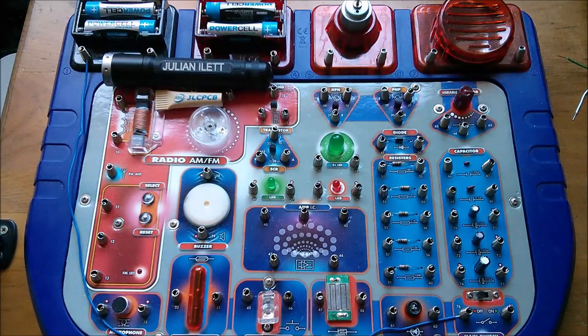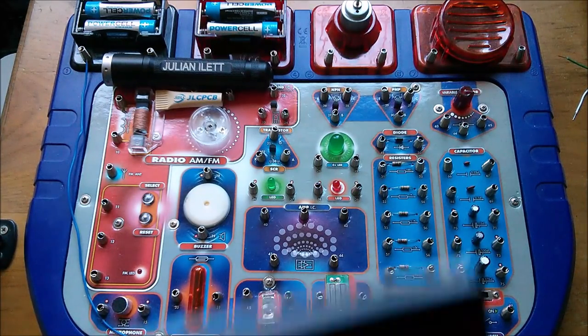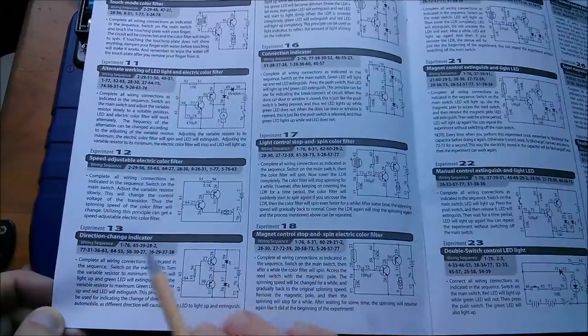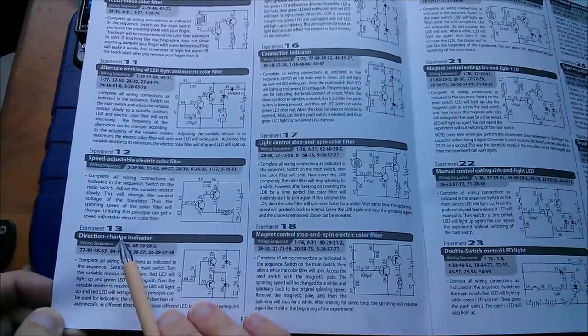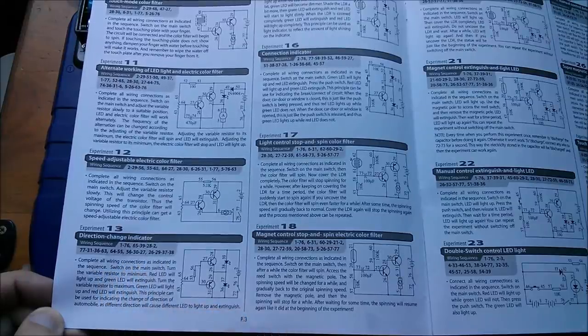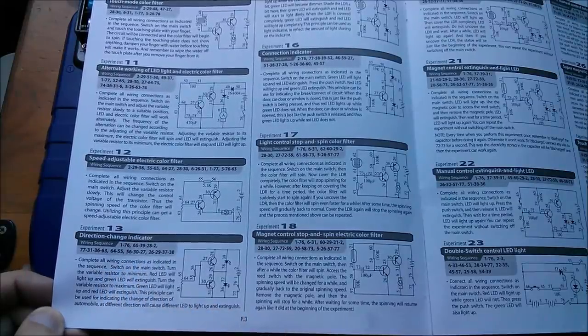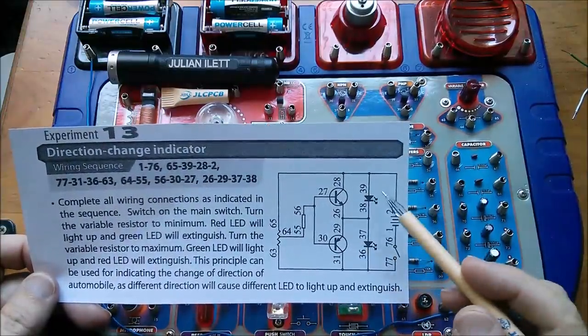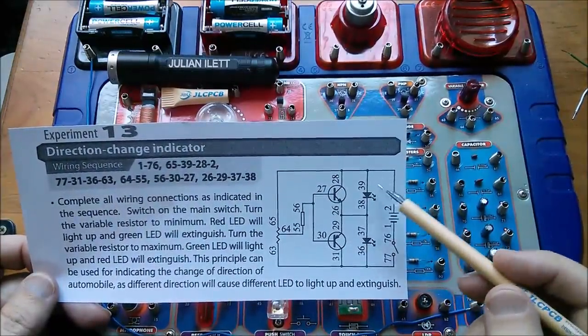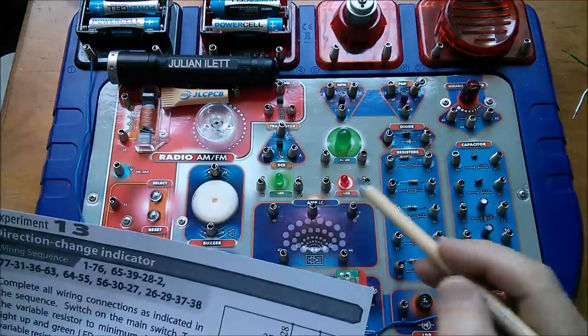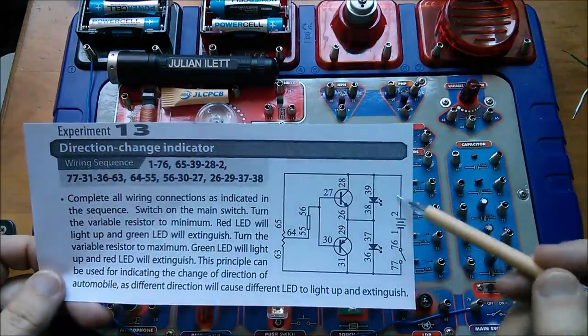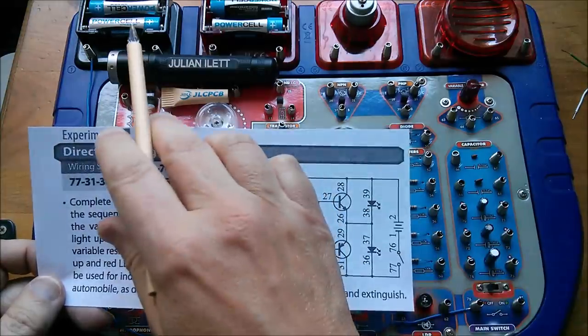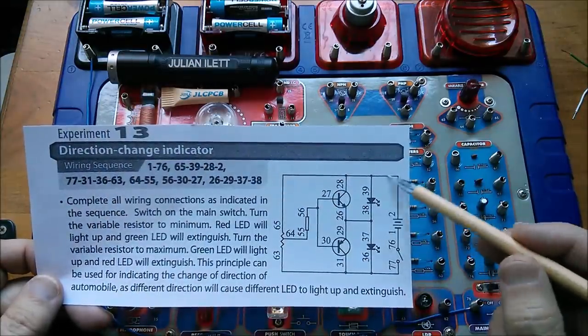Good morning all, it's basic circuit time and today I thought I'd do experiment 13, direction change indicator. This is an interesting circuit because we've got the two LEDs, the green and the red, strapped directly across the three volt battery, so two alkaline cells there.